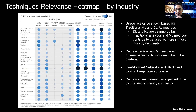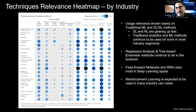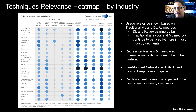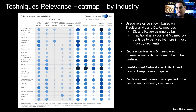Another key aspect is, when you look at techniques relevance heat map by industry — this is analysis from McKinsey — they have analyzed somewhere around 400 use cases across 19 industries. Some of the key takeaways we see here is the usage relevance based on two different parts: one is on the traditional analytics techniques, more about the core machine learning methods, and also the improved or advanced machine learning, deep learning, and reinforcement learning areas.